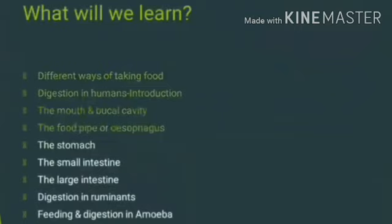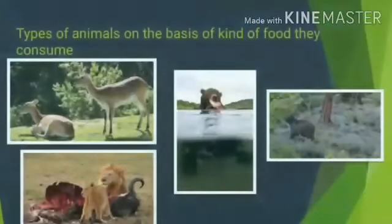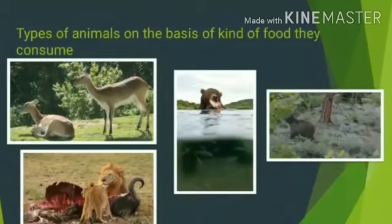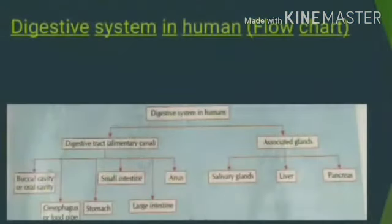This is all the content we are discussing in this chapter. This is the second chapter for you, covering types of animals on the basis of the kind of food they can consume. Different types of animals consume food in different categories. Some animals eat only plant items. So the digestive system — here is a flow chart for you.